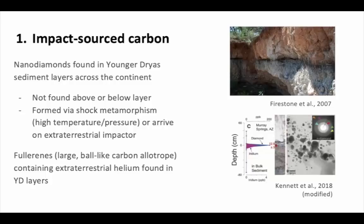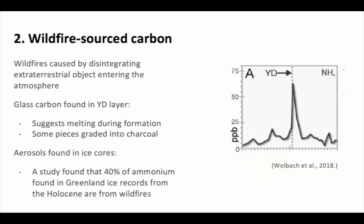In addition to evidence pointing to impact, the Younger Dryas boundary layer contains evidence for intense wildfires. Some of the evidence includes glass-like carbon several centimeters in diameter, seen within the black mat layer often associated with the Younger Dryas boundary. Combustion-related aerosols such as ammonium were found in three ice cores from Greenland.